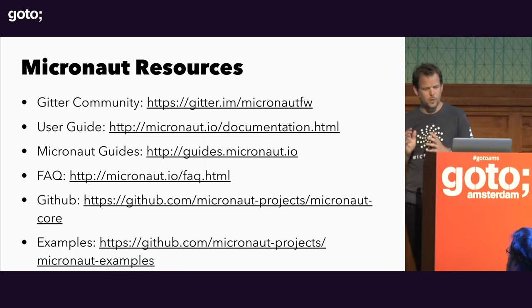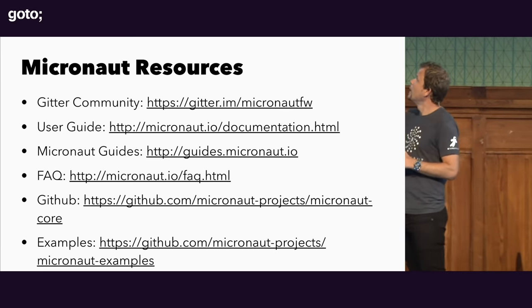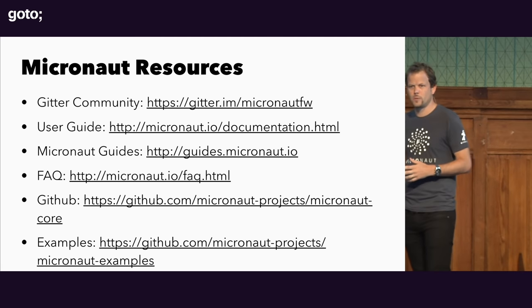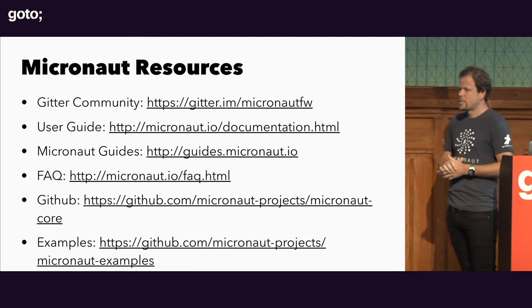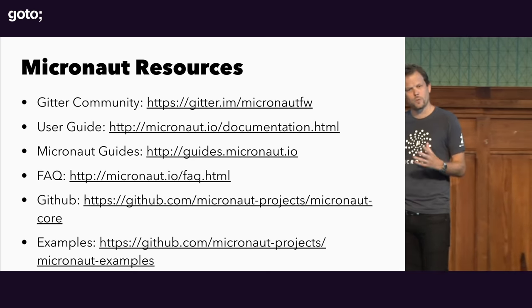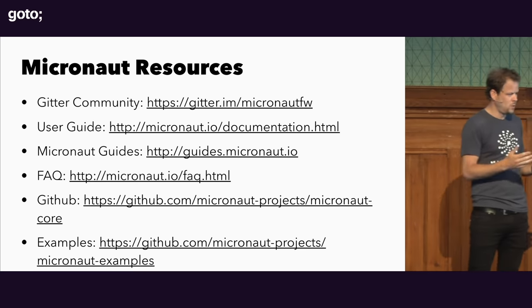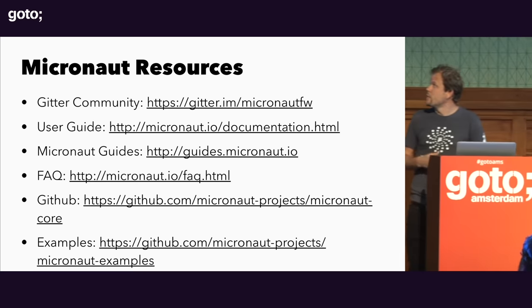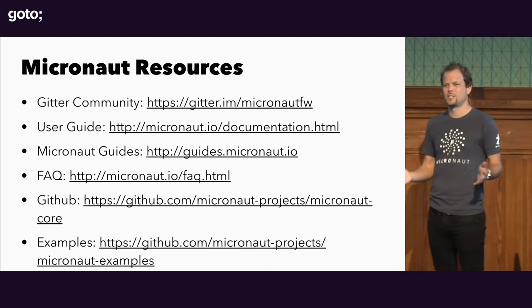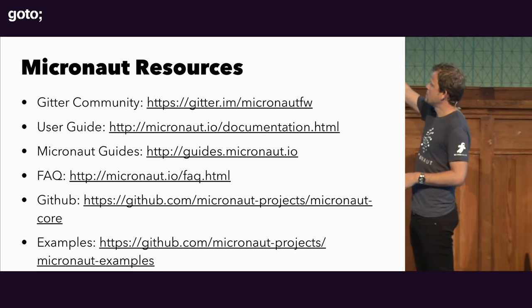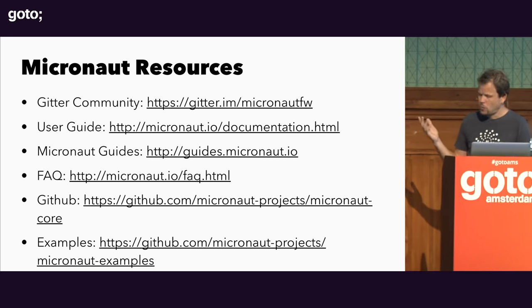Some Micronaut resources: we have a Gitter community if you want to chat online. There's a really comprehensive user guide and the Micronaut guides website with guides on how to integrate Micronaut with different technologies, whether it be JPA or JWT-based security. We have an FAQ. Micronaut is completely open source, Apache licensed. The project is on GitHub with examples.